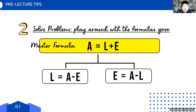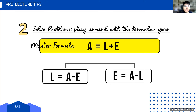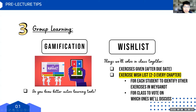In class, we might discuss a scenario where variable A is missing, but on the exam, B or C could be missing, making it more complex. The only way to understand is to really break down the formulas. For any kind of solving, make sure you know how to play around with the formula or framework.